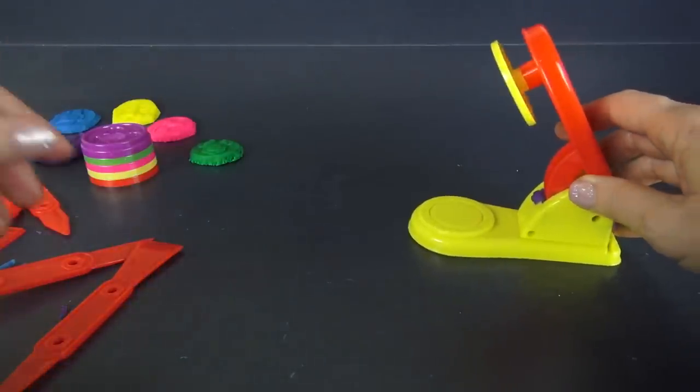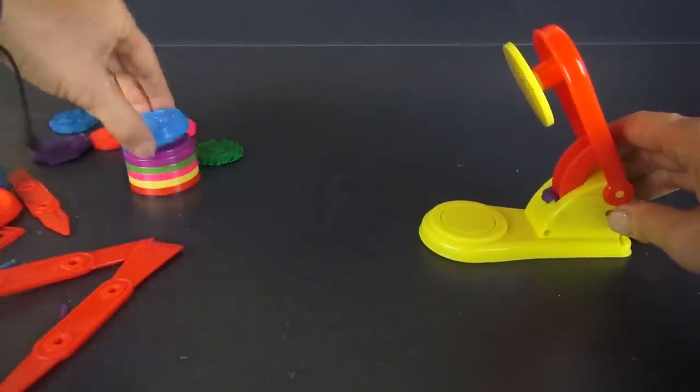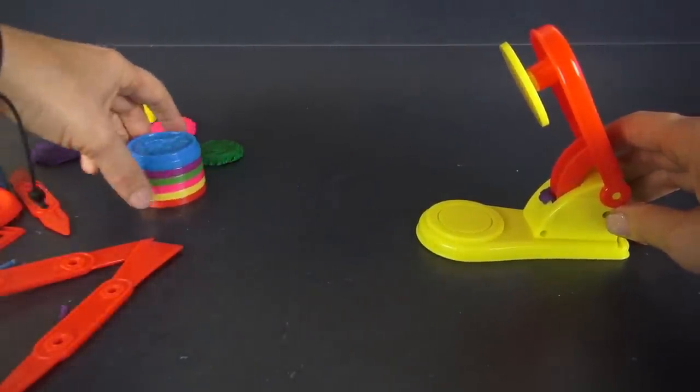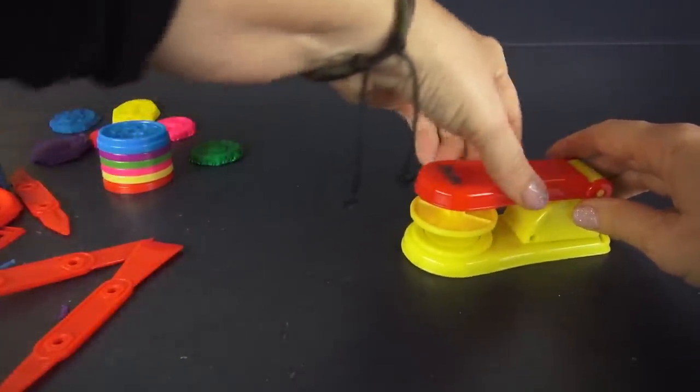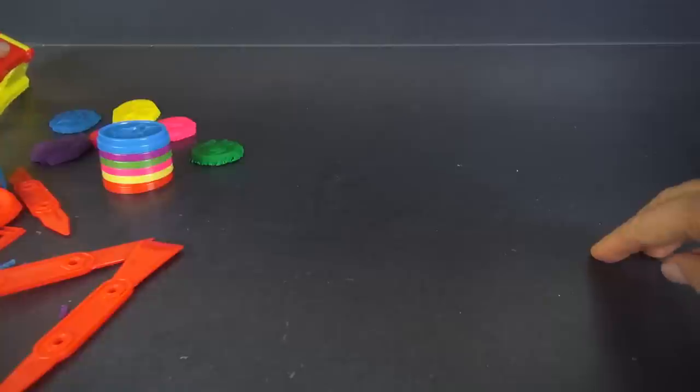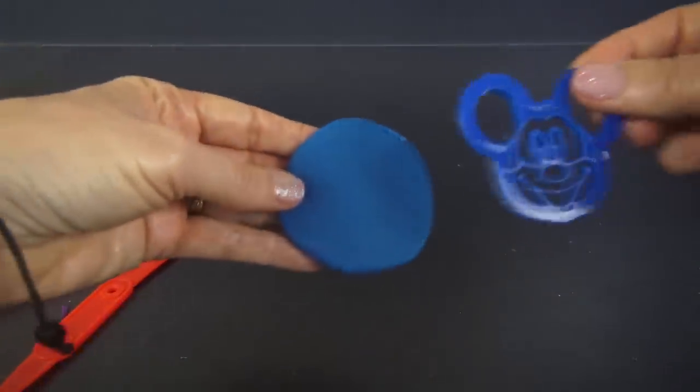OK, so we have made all of the molds from the lids. Look how nice they stack up. That's nice. So, we can put our stamper away. And we are going to make another Mickey.